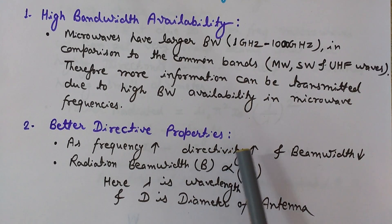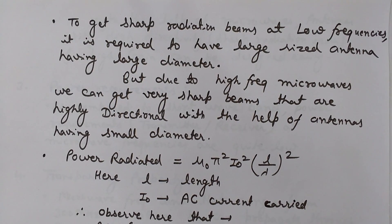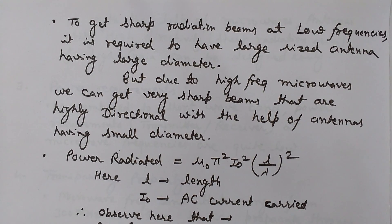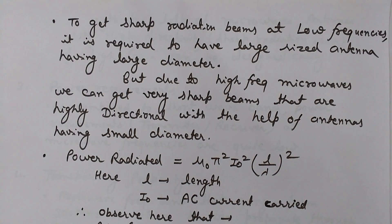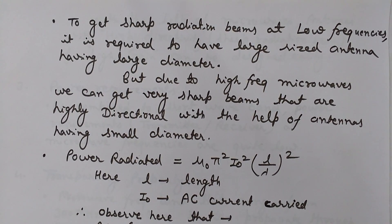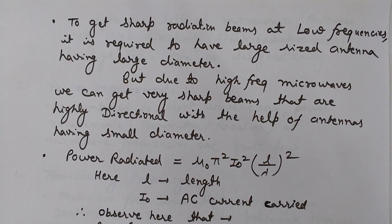One important thing to keep in mind: if we want sharp beams at low frequencies, we require large antenna sizes — that is, a large diameter. But since microwaves have high frequency, to get sharp radiations at high frequencies we do not need large antennas. Because of this high frequency, sharp radiations are achieved with small-sized antennas having small diameters.